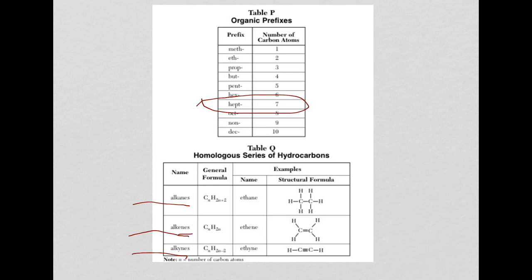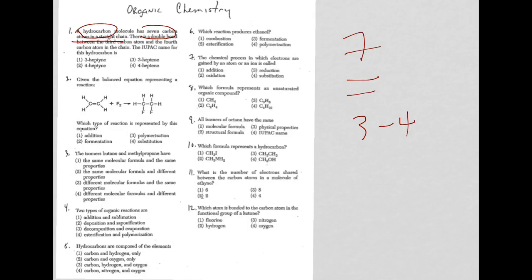Then finally, which heptene is it? Since the double bond is occurring between the third and fourth carbon, you go with the lowest number, which is three. So the answer there is 3-heptene.